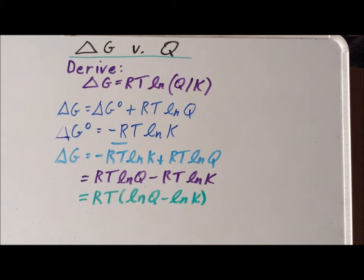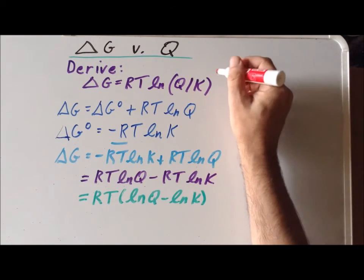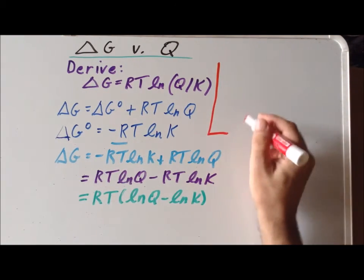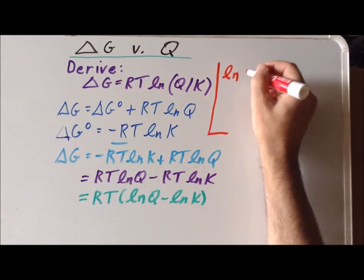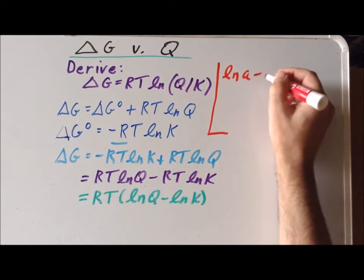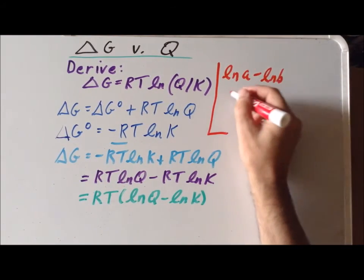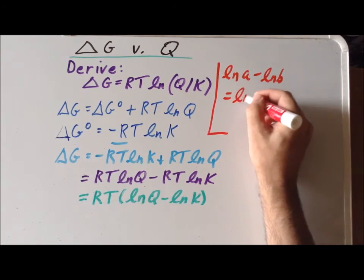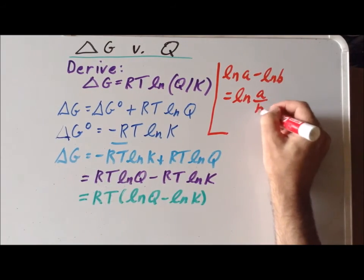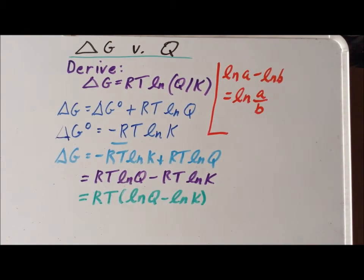At this point, we recall an important fact about the properties of logarithms, that the natural log of A minus the natural log of B can be expressed as the natural log of A divided by B. If we do that here, the natural log of Q minus the natural log of K, we can write it as follows.